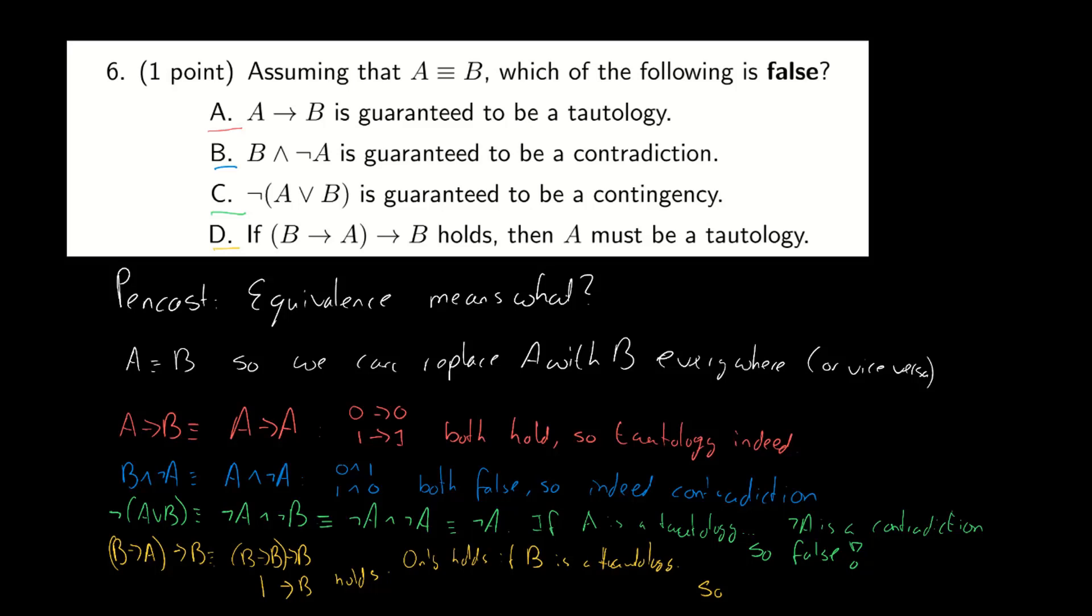So if it holds, then B must be a tautology. So if B is a tautology, well then A must be a tautology as well. So this is also correct. So there you go. Hopefully this clears things up a bit, and I'll see you around for the next one.